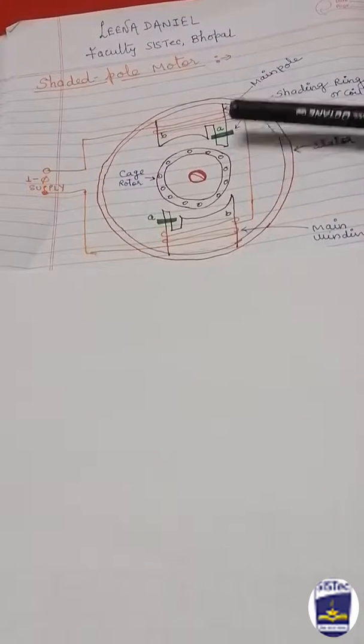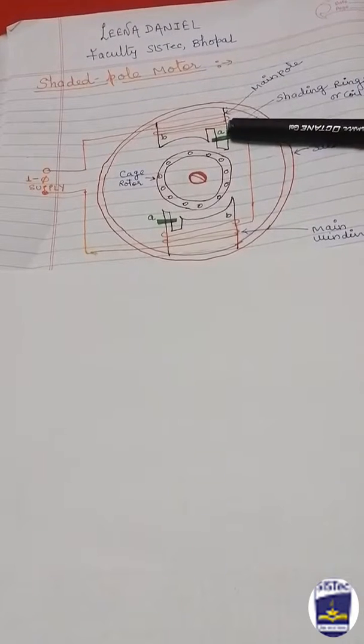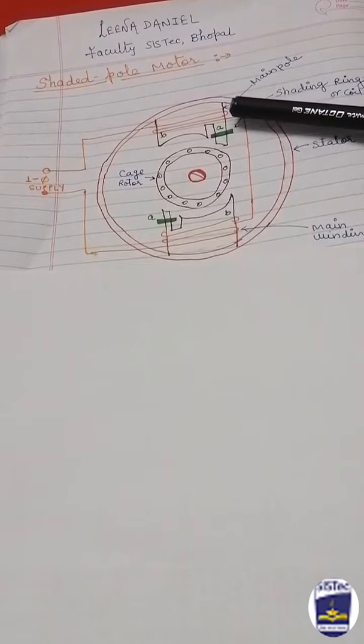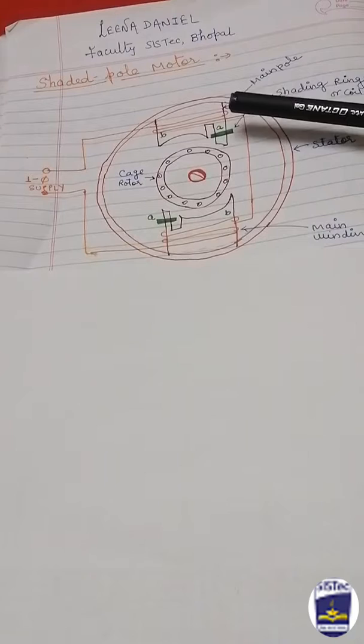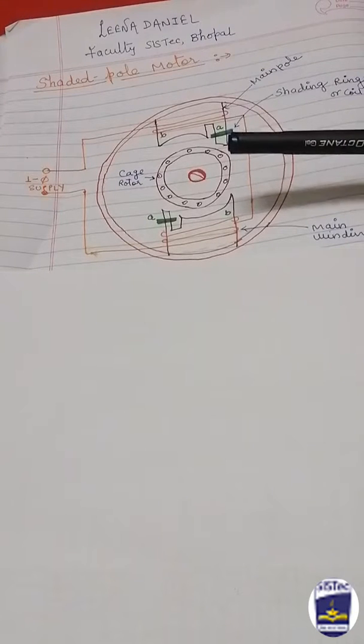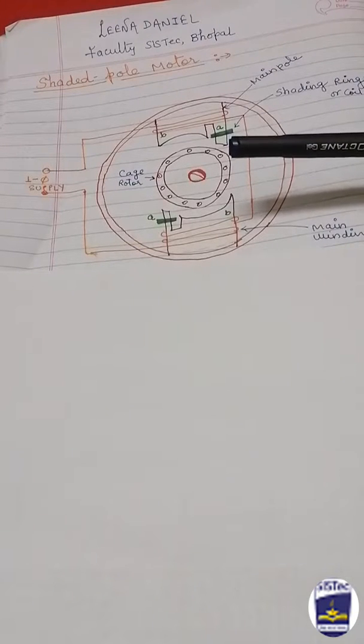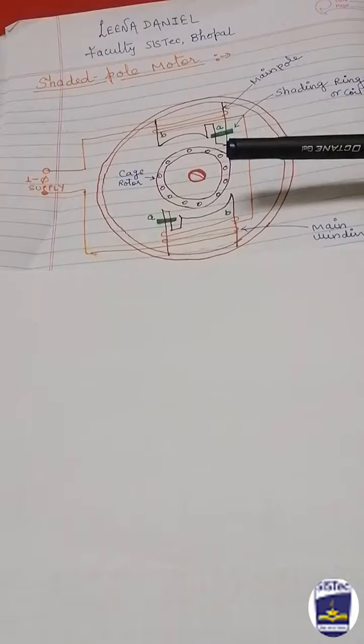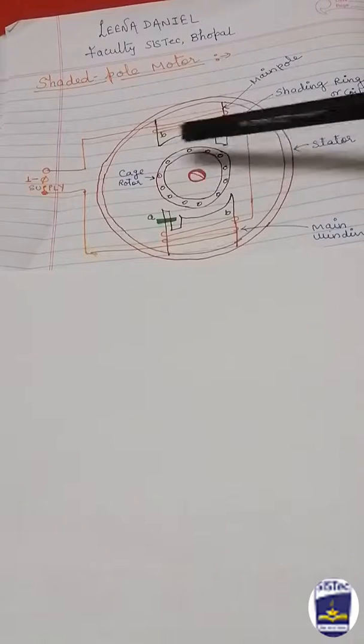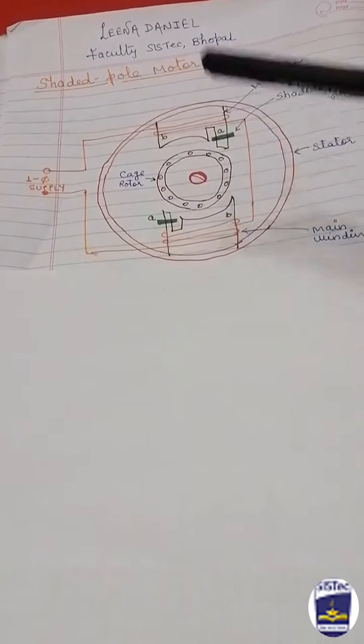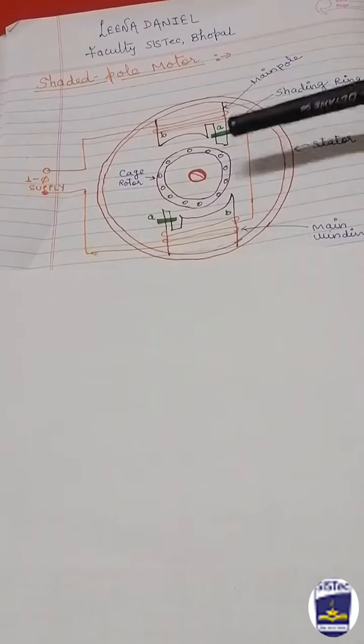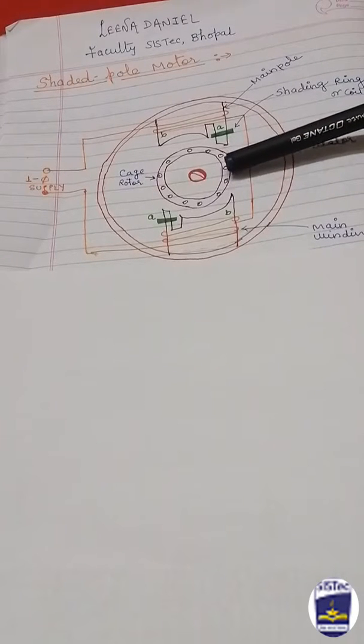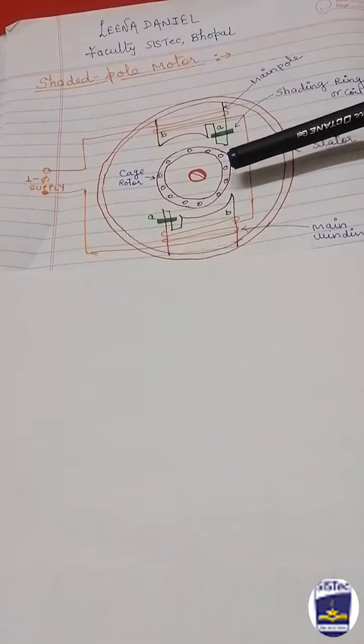This flux displacement is responsible for creating or setting up a rotating magnetic field. Under the action of the rotating flux, a starting torque is developed in the cage rotor and the rotor starts running.